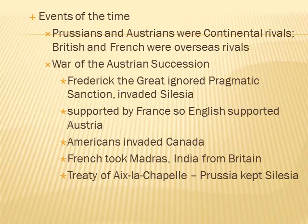Events of the time: Prussians and Austrians were continental rivals; the British and French were overseas rivals. In the War of the Austrian Succession, Frederick the Great ignored the Pragmatic Sanction and invaded Silesia, supported by France, which meant England supported Austria. Americans invaded Canada, and the French took Madras, India from Britain. Eventually the Treaty of Aix-la-Chapelle was signed — Prussia keeps Silesia, demonstrating the strength of Prussia.